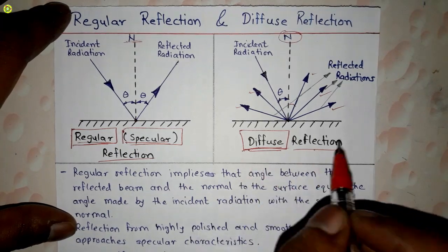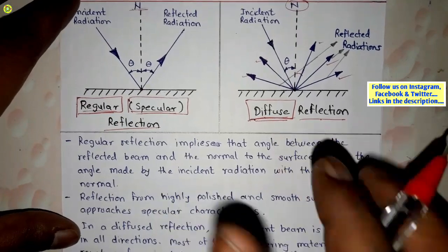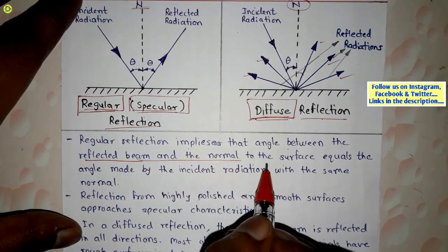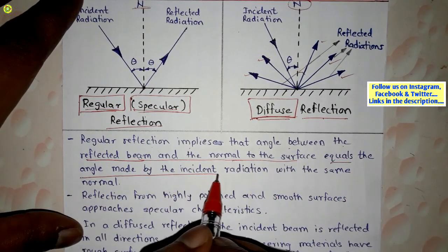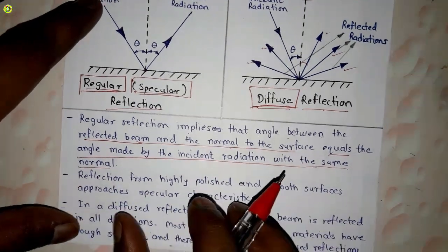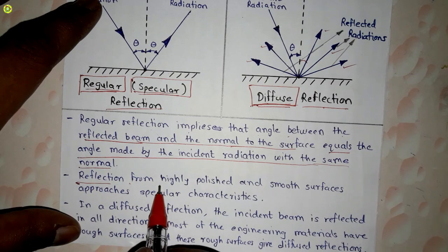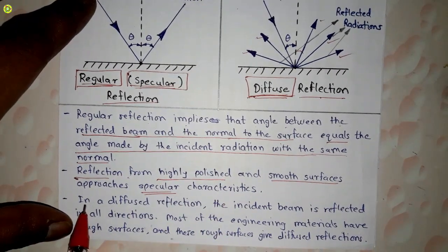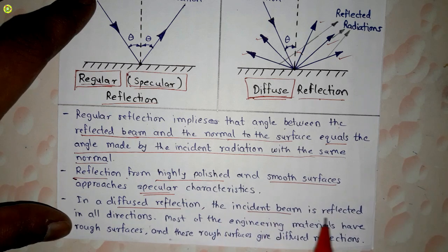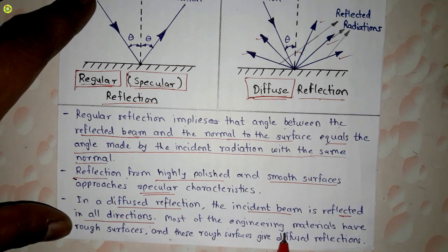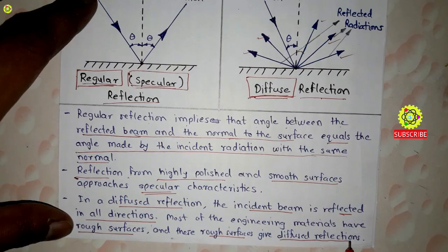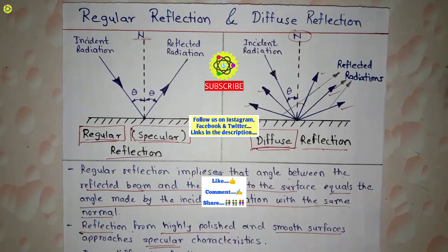To summarize: regular reflection means the angle between the reflected beam and the normal equals the angle made by the incident radiation with the same normal, occurring on highly polished smooth surfaces. In diffuse reflection, the incident beam is reflected in all directions. Most engineering materials have rough surfaces and thus give diffuse reflections.